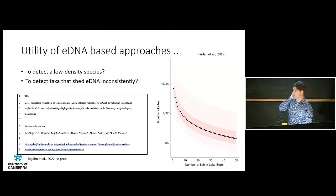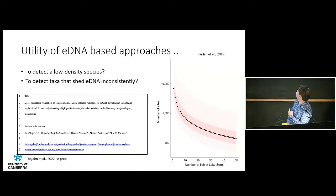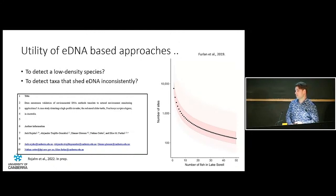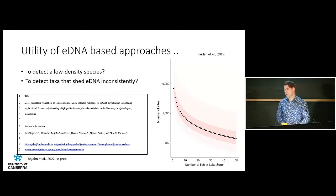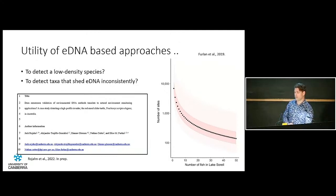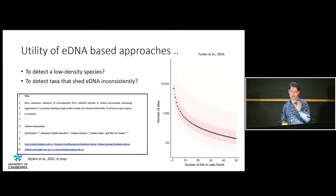This raises the question of the utility of eDNA-based approaches for certain species. With an invasive red-eared slider, we really want to know where it is at the time of incursion. A paper from my supervisor shows that when we have few fish we need more eDNA samples to detect them with confidence — which is logical — but reptiles have added complexity in that they're not shedding eDNA in a consistent way. We can theoretically know a turtle is there but not get that eDNA detection. We can validate things in an ideal mesocosm scenario, but does that translate to the field?